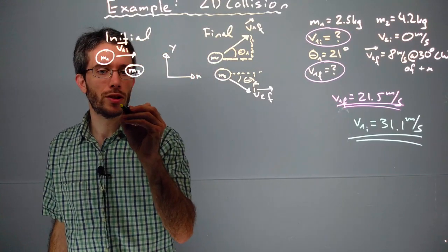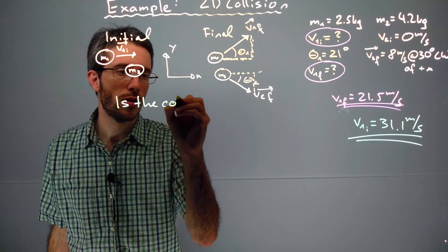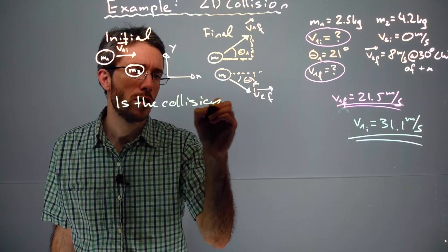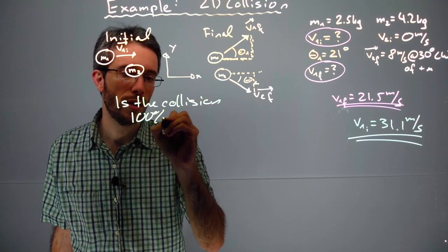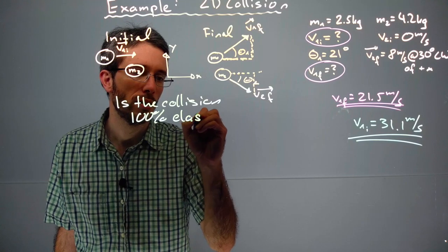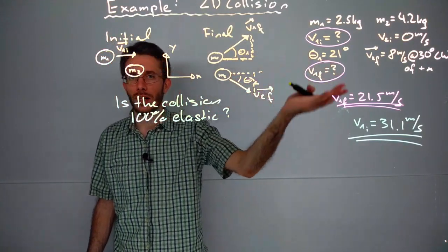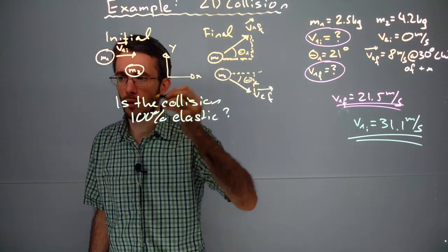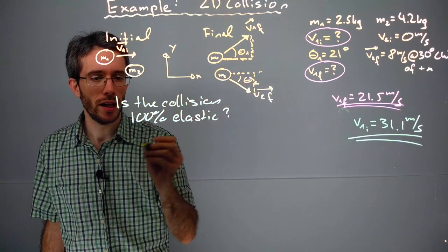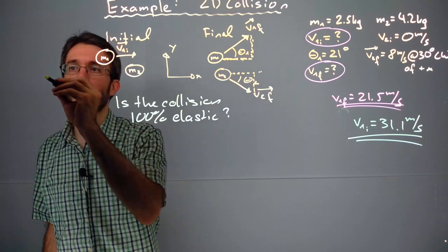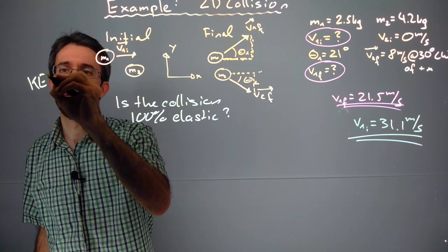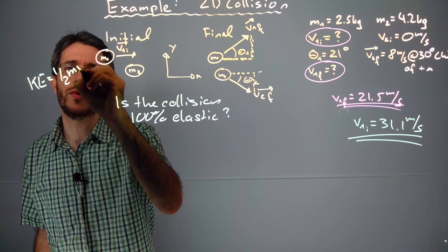Is the collision 100% elastic? If it was elastic, we know that kinetic energy should be conserved. Let's calculate the total initial kinetic energy. We know kinetic energy is 1/2 mv squared.